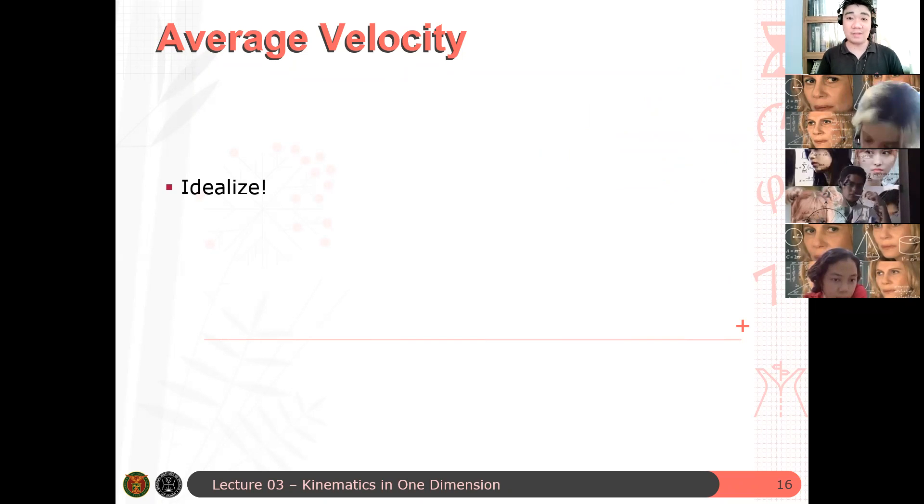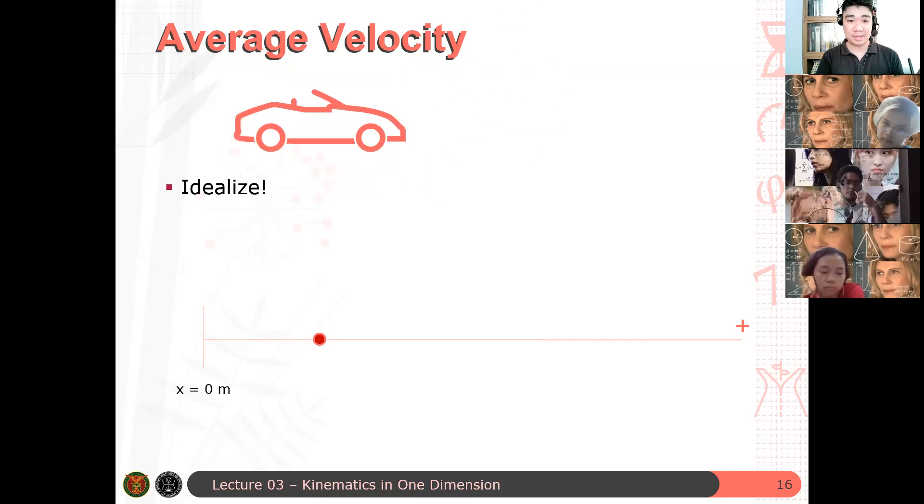Here we will assume that the positive axis is the direction moving towards east, the direction of the positive x axis is towards east, so negative is towards west. Okay.